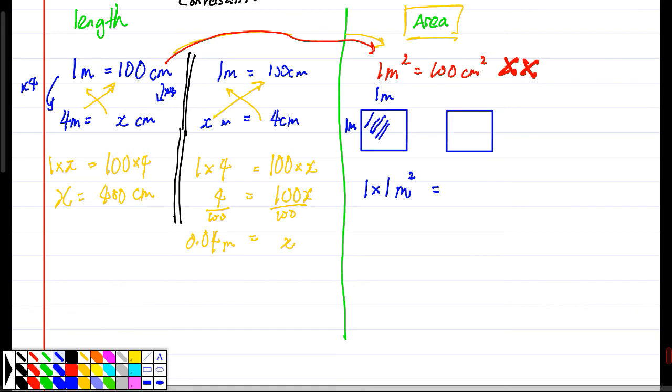Now if I convert to cm, it should be 100 cm times 100 cm, so this is the area. You have 100 times 100, and then this is cm squared. Which means 1 meter squared equals 10,000 cm squared. So this is the correct one.